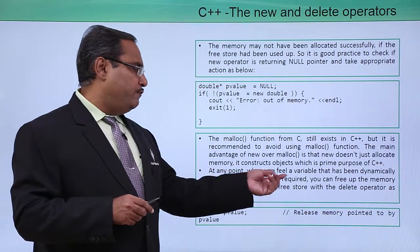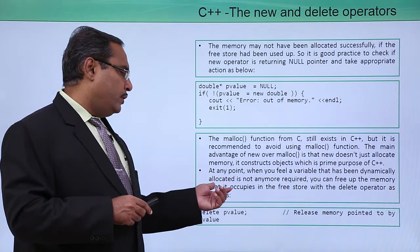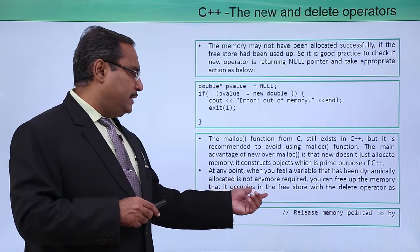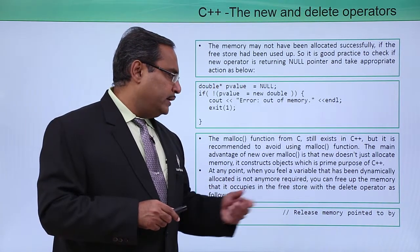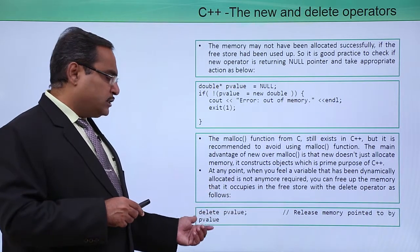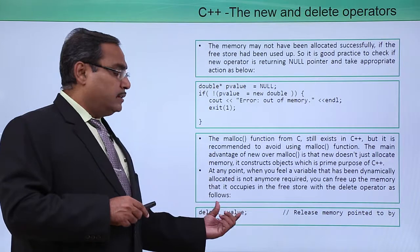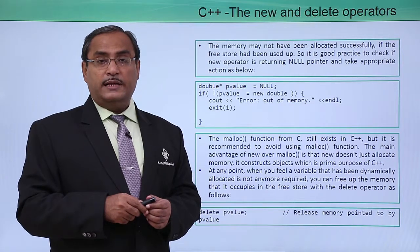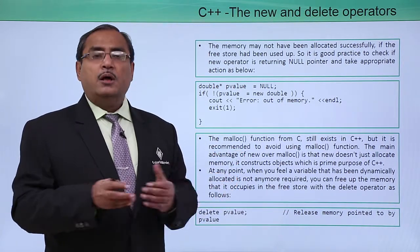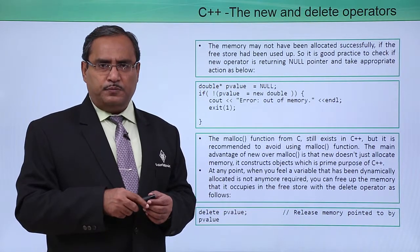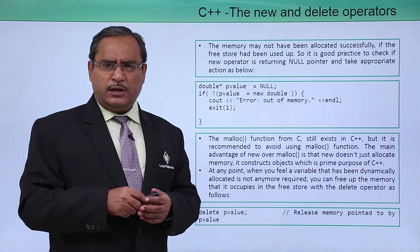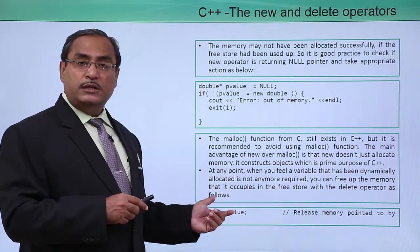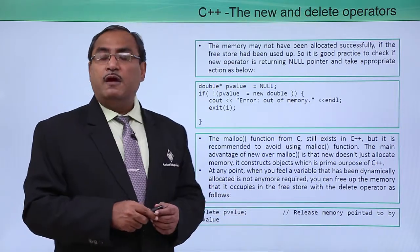At any point when you find that a dynamically allocated variable is no longer required, you can free up the memory it occupies in the free store using the delete operator. The syntax is simply: delete followed by the respective variable name. Whenever the dynamic memory space is no longer useful in the successive part of execution, we release it so it can be reused for other allocations in future.